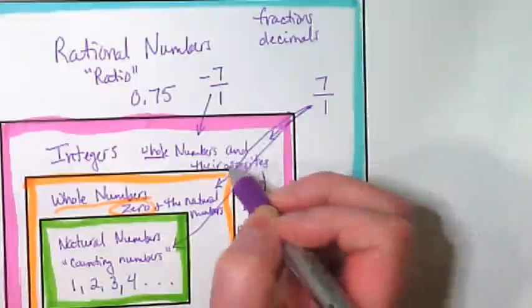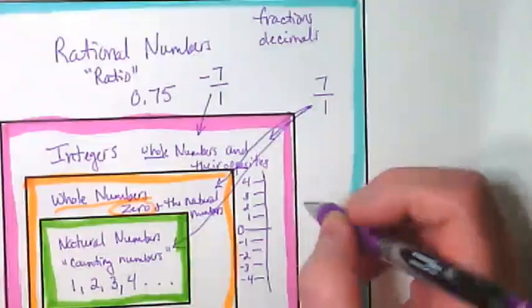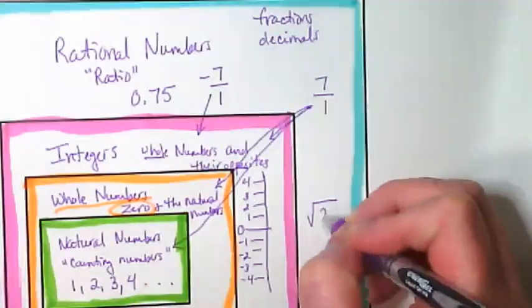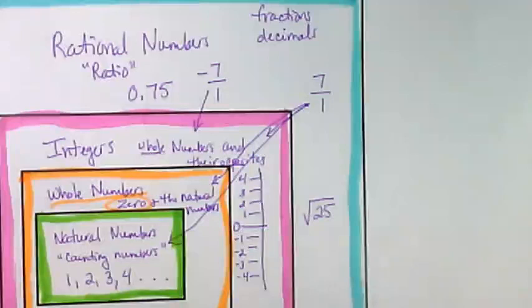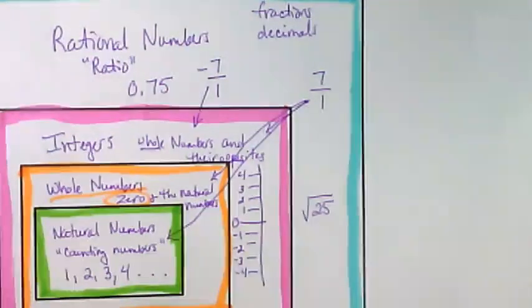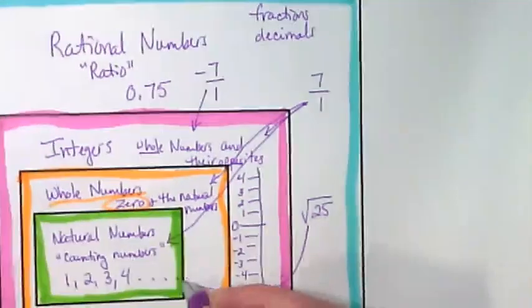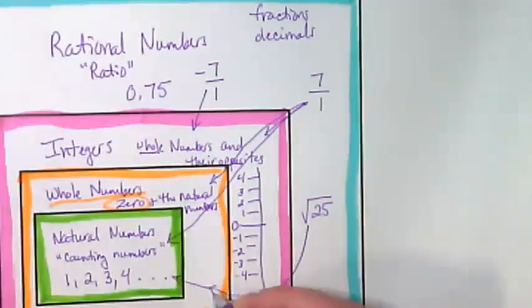If it's a whole or it's opposite, it's an integer. Where would I put the square root of 25? What does the square root of 25 equal? What does it equal? 5. Where can 5 go? Yeah, it goes to all three, doesn't it? I'm going to put an arrow that kind of takes it to all of them.